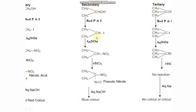Similar reaction steps are involved for secondary alcohols, but in the last step we get a blue color. This is because the nitroalkane derived from secondary alcohol reacts with nitrous acid to give a pseudo-nitro compound. This pseudo-nitro compound reacts with aqueous NaOH or KOH to give a blue color. In the case of tertiary alcohol, the nitroalkane does not react with nitrous acid, so we get no reaction — a colorless solution.